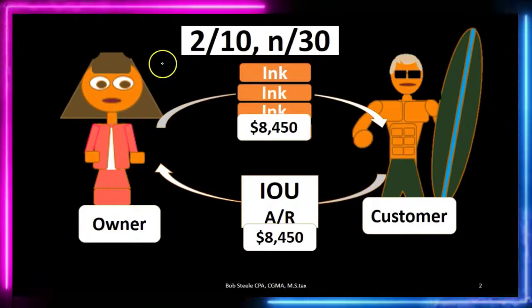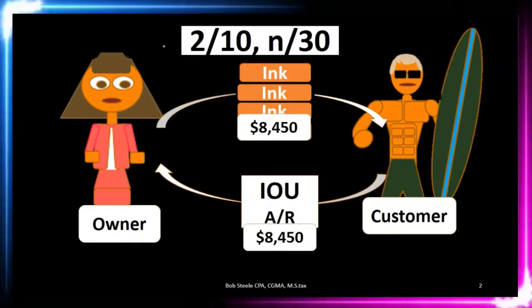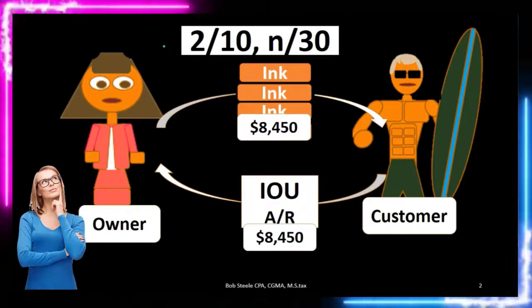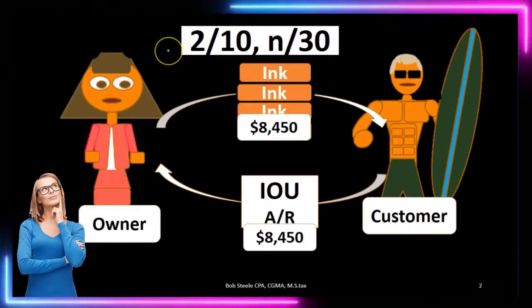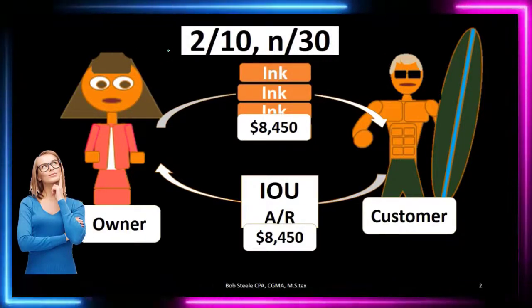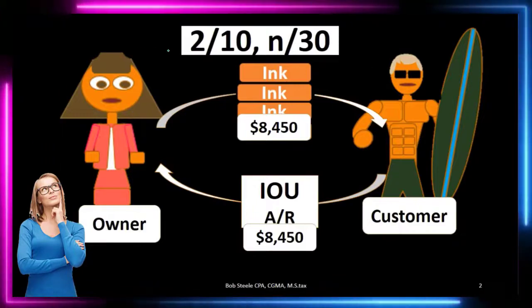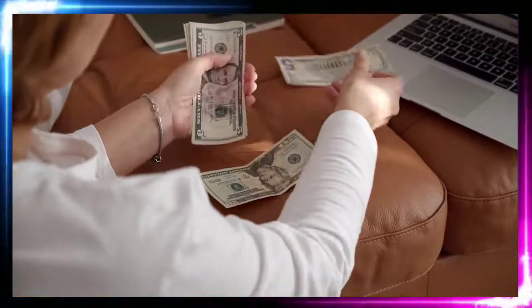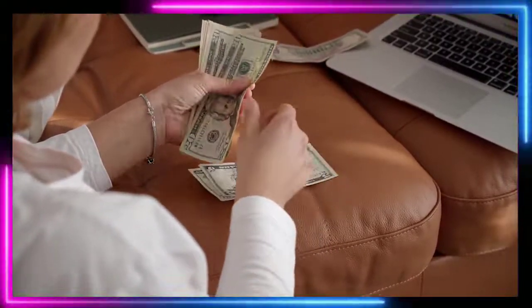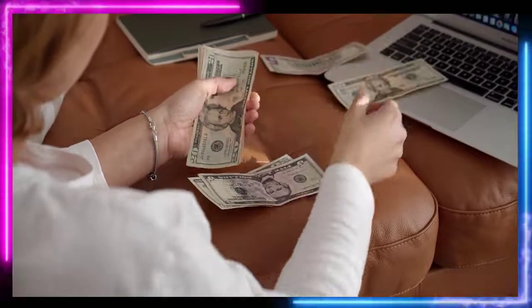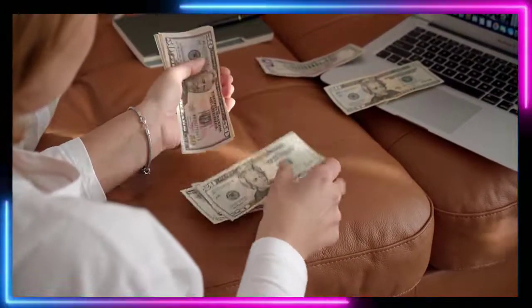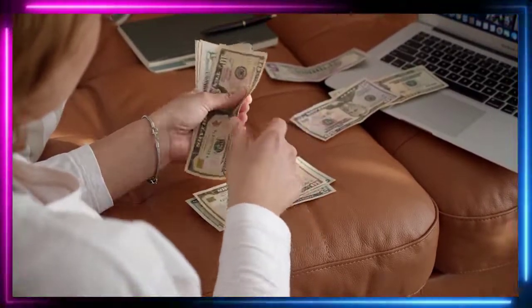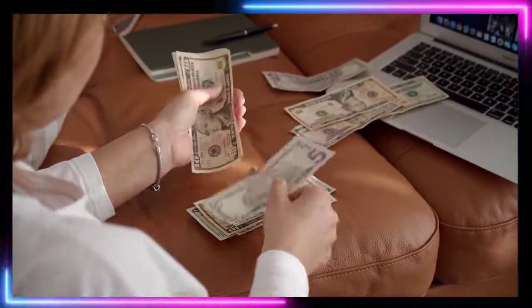We'll often see in the terms of a problem like this: terms of 2/10 and 30. This notation means we have a two percent discount if the customer pays within 10 days; otherwise, payment is due within 30 days. When we first record the journal entry, this doesn't impact the original entry — we put it on the books for the full $8,450.